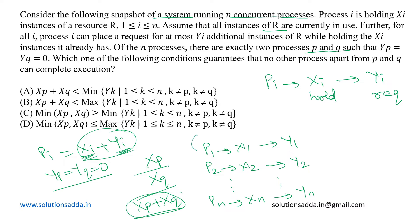For example, let us consider P1 and P2 are those processes such that Y1 and Y2 are both 0. So now, these P1 and P2 can execute using the total of X1 plus X2 resources and after completion, they will release these for other N-2 processes for executing.